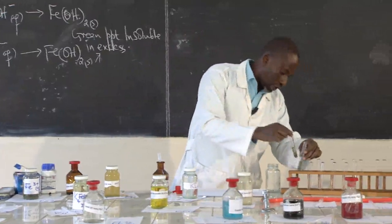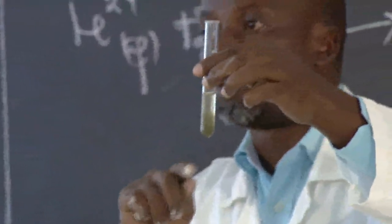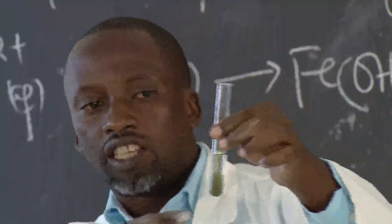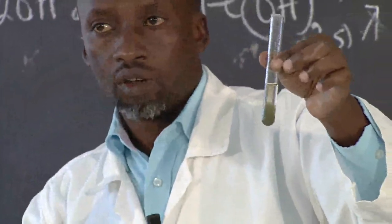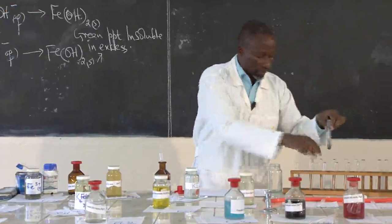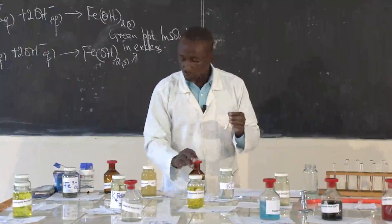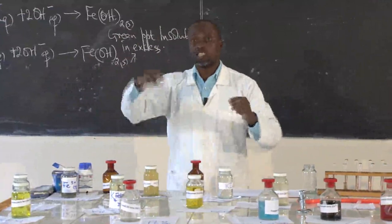Let's see what happens later. As I said earlier, iron 2 easily changes to iron 3. On standing, the dirty green precipitate is turning to brown. Why is it turning to brown? Because it is changing to iron 3 hydroxide. That is because of aerial oxidation. So we are just going to do the same with iron 3 to see the difference.